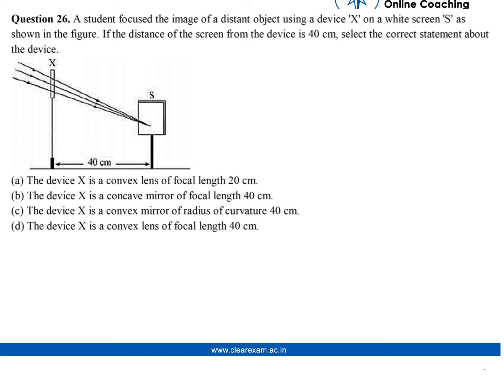First statement is, the device X is a convex lens of focal length 20 cm. Second one is, the device X is a concave mirror of focal length 40 cm. Third part is, the device X is a convex mirror of radius of curvature 40 cm. And the fourth part is, the device X is a convex lens of focal length 40 cm.